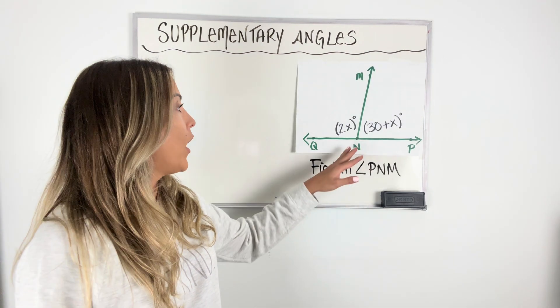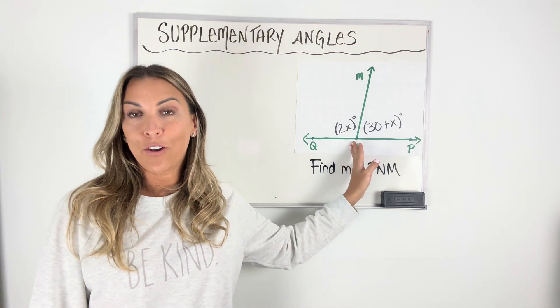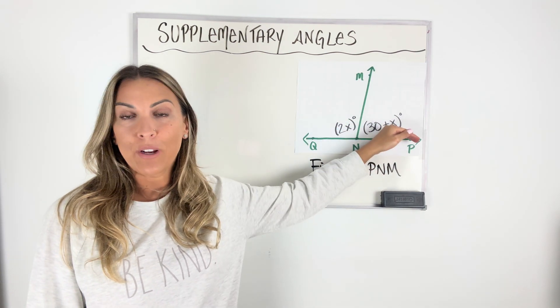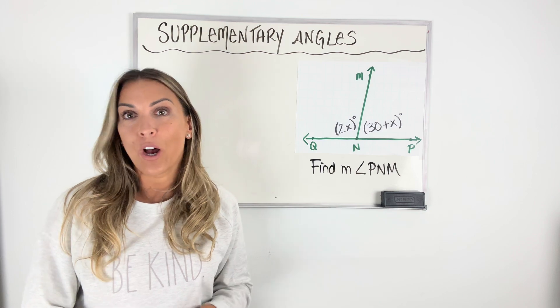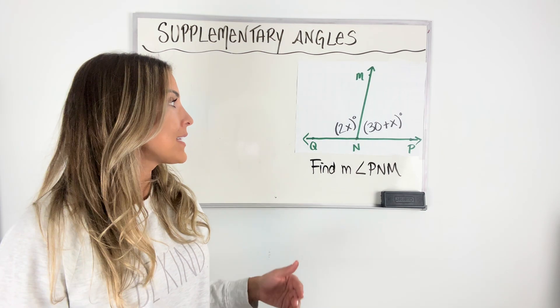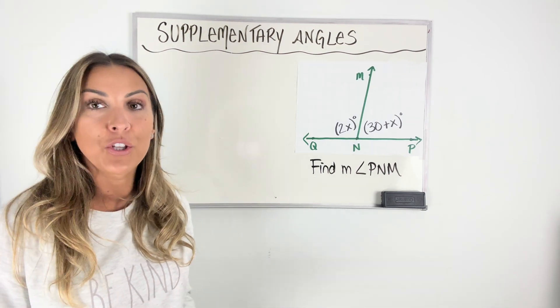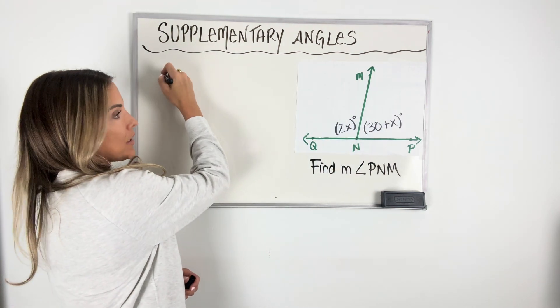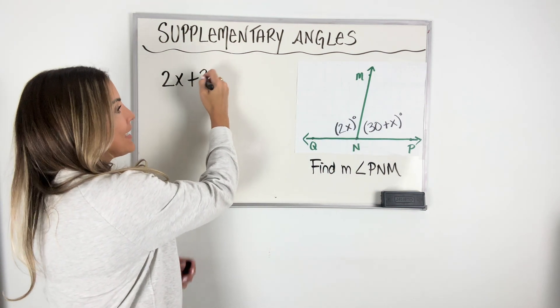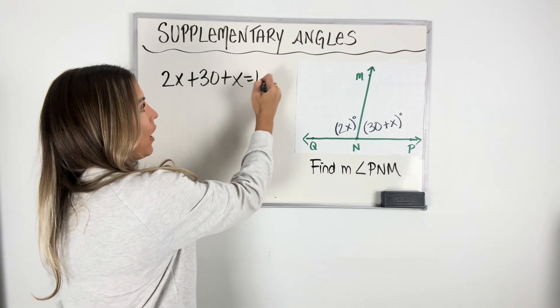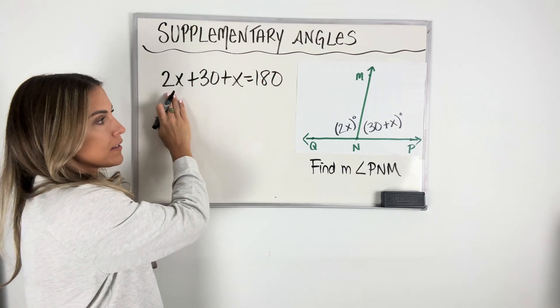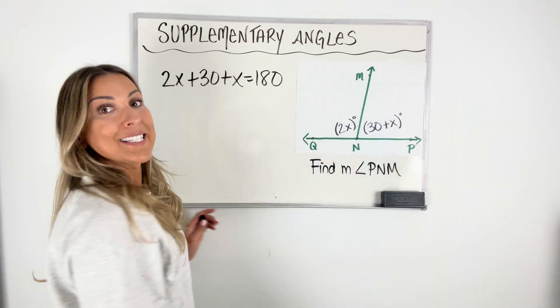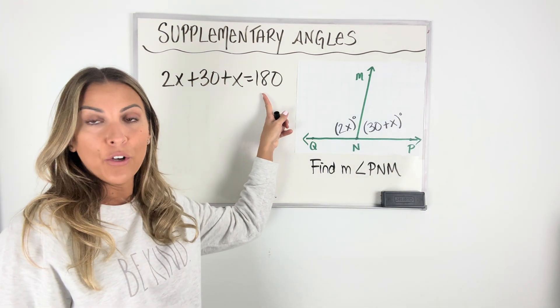All right, one more example. So again, I have supplementary angles. And how do I know? I know because these two angles together make a straight line and a straight line is always 180 degrees. So as I look to try to build an equation, I'm going to do it by adding these two together, those two expressions that represent those two angle measures and setting them equal to 180 degrees. So 2X, that first angle, plus 30 plus X, that second angle, together will equal 180 degrees.